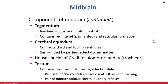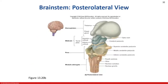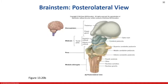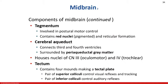The tegmentum deals with motor control specifically for postural motor control. It contains the reticular formation, which also has to do with postural regulation. Then there's the cerebral aqueduct, a component of our ventricular system — the system that incorporates cerebrospinal fluid. The cerebral aqueduct connects the third and fourth ventricles to one another.